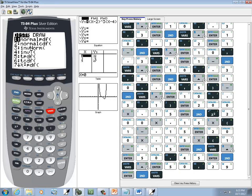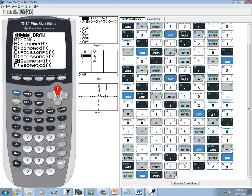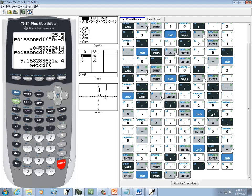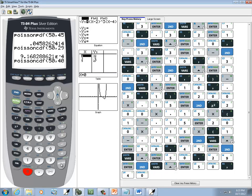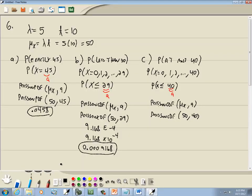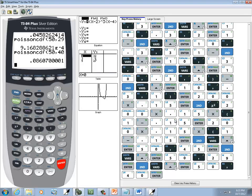I'm going to do second vars. Choose Poisson CDF. 50, comma, 40. Enter. And this would be 0.0861.